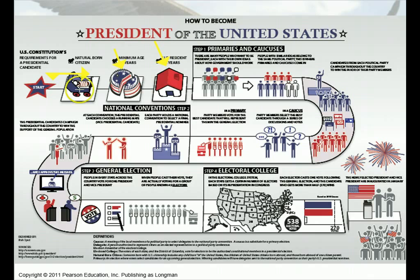Step one: you have your primaries and caucuses. A primary means that you actually officially vote for who you want your nominee to be within the party, and we narrow down the selection. You might have 15 or 20 people running in the primaries, and you'll narrow it down to a few candidates, and then eventually down to the one that is going to be selected by the party.